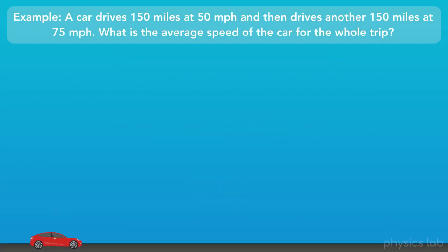Take a look at this example. A car drives 150 miles at 50 miles per hour, then drives for another 150 miles at 75 miles per hour. What is the average speed of the car for the whole trip?